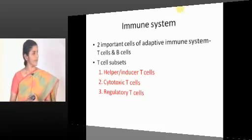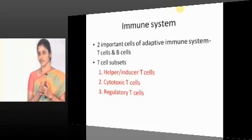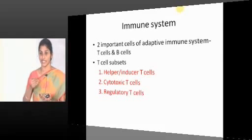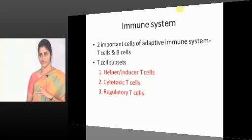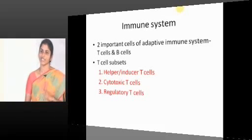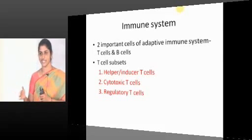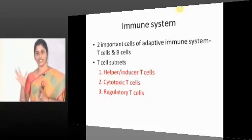Coming to the discussion, there are two important cells of the adaptive system. We basically classify immunity into innate and adaptive. What are the components of innate immunity? There are recent additions to this topic. What is the basic difference between innate and adaptive immunity? Innate immunity is natural immunity — it is always there, always ready to attack. How it is inferior to adaptive immunity is that though it is always ready, it is less specific and less effective comparatively.